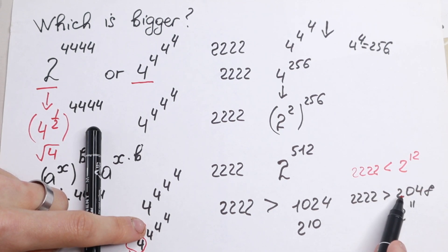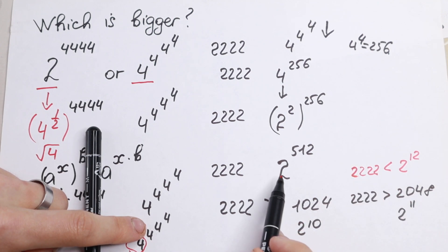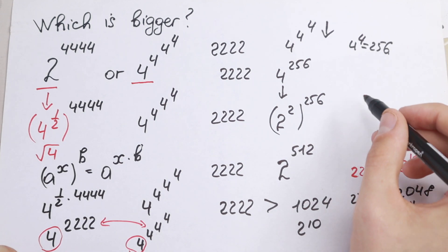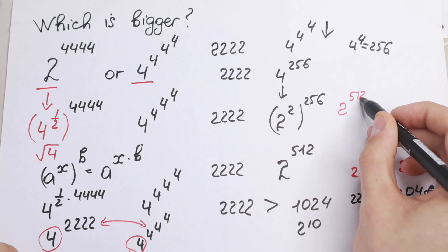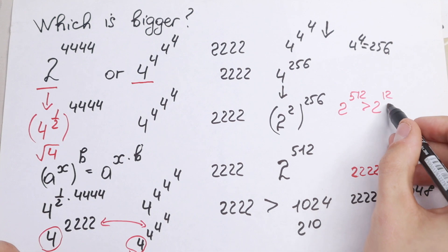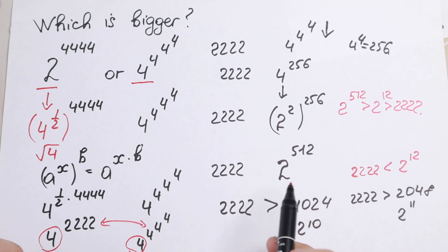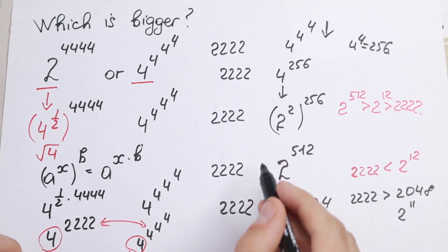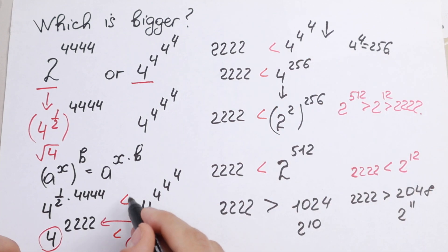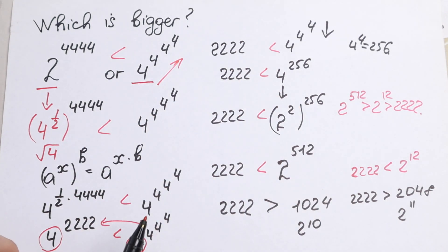Since 2,222 is less than 2^12, and on the right hand side we have 2 to the power 512, we can write that 2^512 is greater than 2^12, which is greater than 2,222. So the right hand side is greater. We place the greater-than sign, and our final answer is that 4 to the power 4 to the power 4 is greater than 2 to the power 4,444.